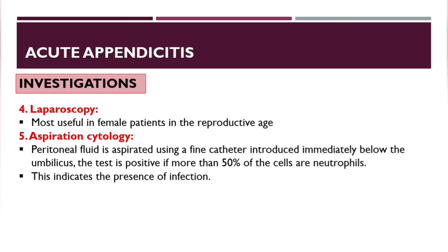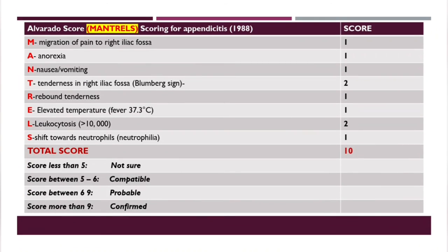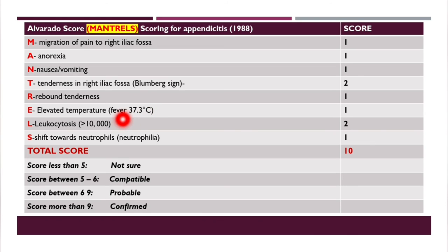Laparoscopy is most useful in female patients of reproductive age. Aspiration cytology: peritoneal fluid is aspirated using a fine catheter introduced below the umbilicus; the test is positive if more than 50% of cells are neutrophils, indicating infection. The Alvarado score (MANTRELS) is an acronym: Migration of pain to right iliac fossa, Anorexia, Nausea or Vomiting, Tenderness in right iliac fossa, Rebound tenderness (Bloomberg sign), Elevated Temperature (≥37.3°C), Leukocytosis (>10,000), and Shift towards neutrophils.